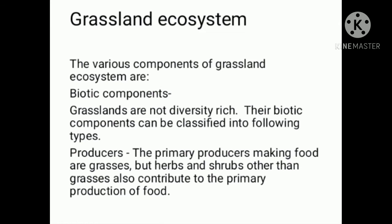The primary producers of the grassland ecosystem are the grasses themselves. Herbs and shrubs, other than grasses, also contribute to the primary production of food.